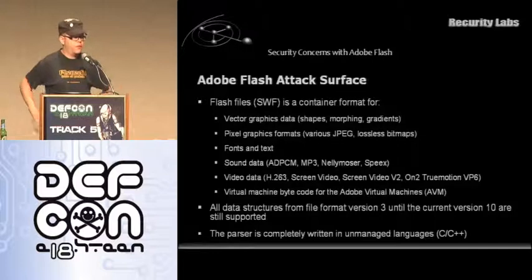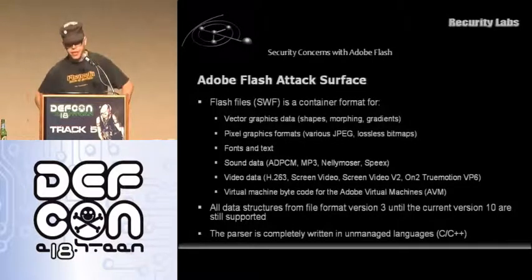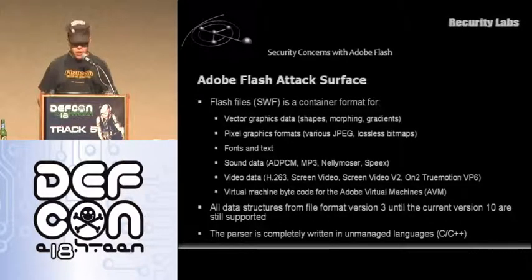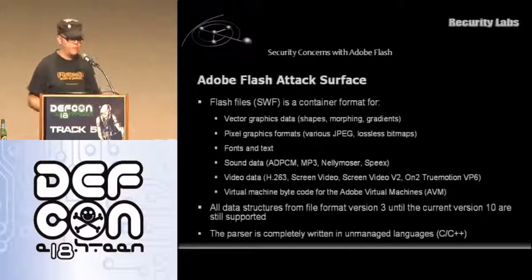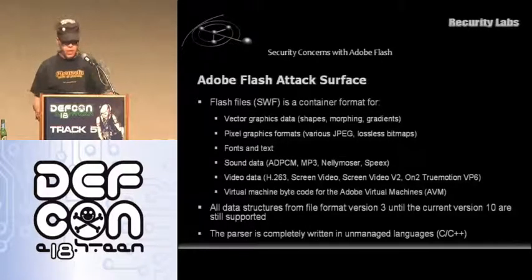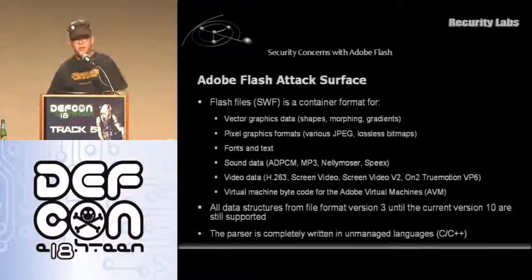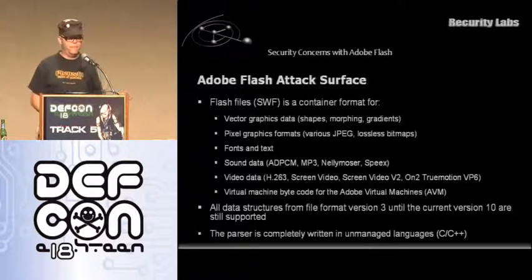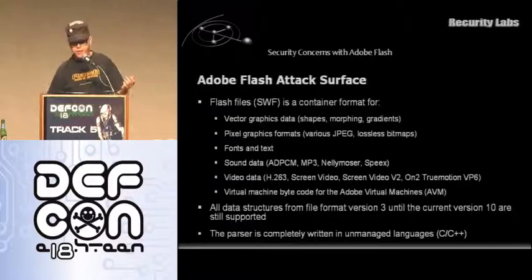What type of attack surface are we looking at when we load a flash file into a flash player? The things that usually break in software when you try to exploit it are parsers — the piece of code that actually takes apart the protocol or file format. The flash file format is a container format that contains vector graphics, picture graphics, fonts, sound data, video data of all types, and virtual machine code. What can possibly go wrong? Pretty much everything. About 80% of the software is parsing and it's all written in C by people from Adobe — and hence we have a problem.